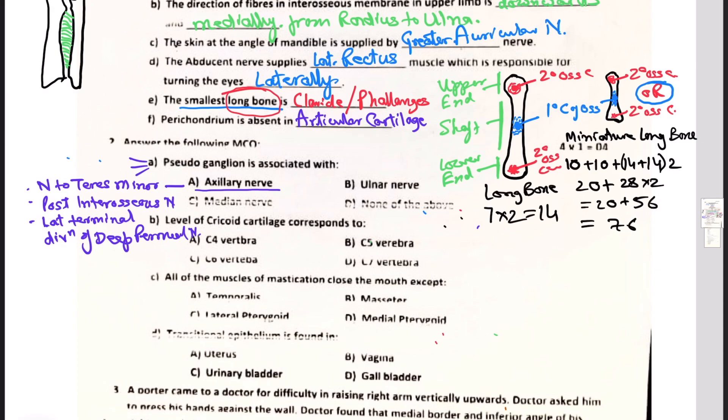Next question is level of cricoid cartilage corresponds to C4 vertebra, C5 vertebra, C6 vertebrae, or C7 vertebrae. Remember that cricoid cartilage corresponds to C6 cervical vertebrae and upper part of the thyroid cartilage corresponds to C4 cervical vertebrae, so answer will be C6 vertebrae.